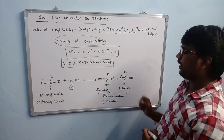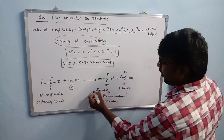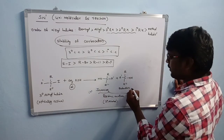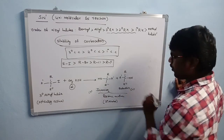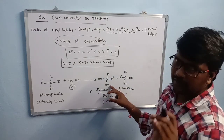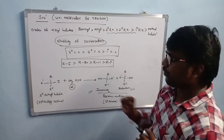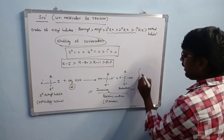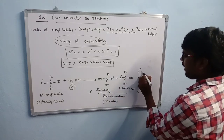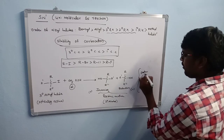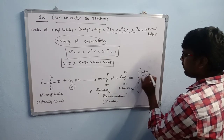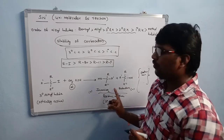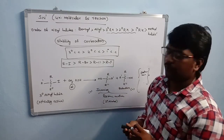In the inversion and retention products formed, inversion is always the greater product and retention is the lesser product. The percentage of inversion product is higher. The SN1 reaction is an exothermic reaction overall. If an optically active alkyl halide is taken, the product obtained is a racemic mixture.